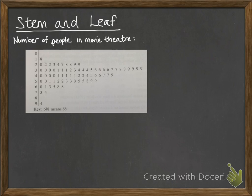There are some key parts of the stem and leaf diagram that you must make sure you've got. Firstly, it's ordered. And secondly, it must have a key.